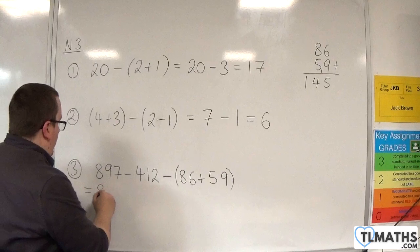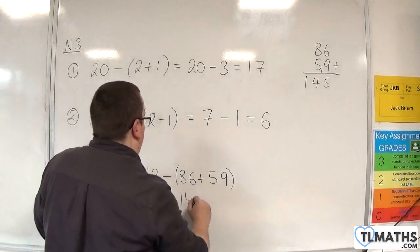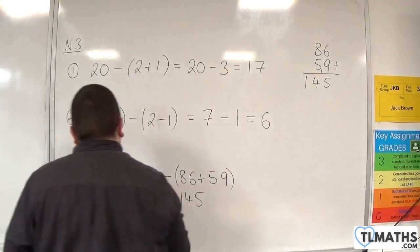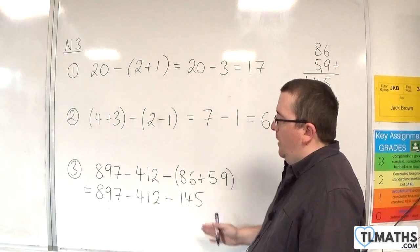So we have 897 take away 412, take away 145. Now we've just got subtractions. We work from the left to the right.